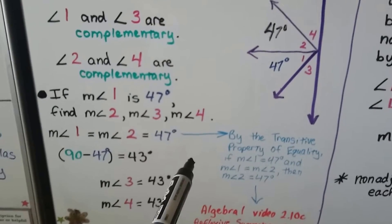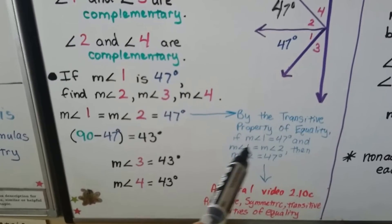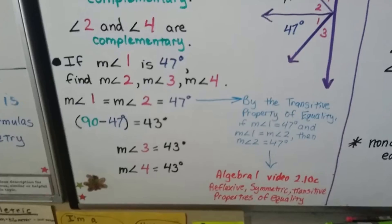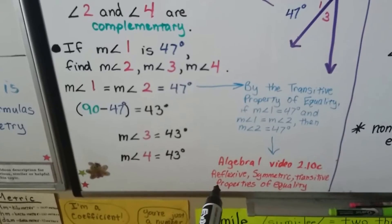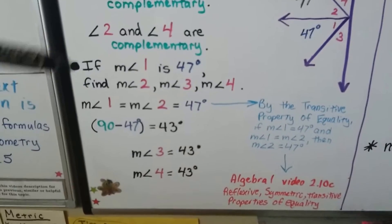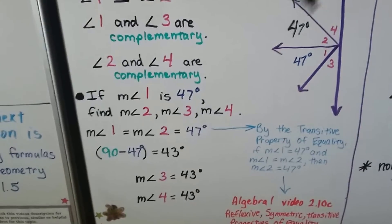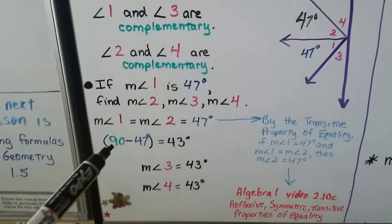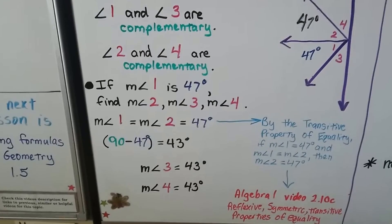Since angle 1 and angle 3 are complementary, they total 90 degrees, and since angle 2 and angle 4 are complementary, they also total 90 degrees. So 90 minus 47 is 43 degrees, meaning the measure of angle 3 is 43 degrees, and so is the measure of angle 4.